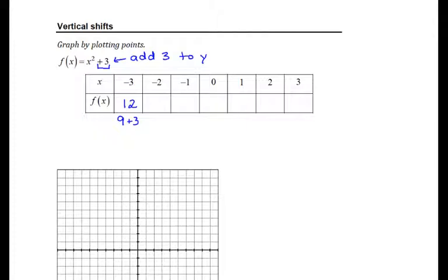Negative 2 squared we found to be 4, and 4 plus 3 gives us 7. Negative 1 squared we found to be 1, and 1 plus 3 gives me 4. Zero squared was 0, zero plus 3 gives me 3. And we'll find that we have the same symmetry in this that we had on the first one, since we're getting our same 1, 4, and 9 over again here.